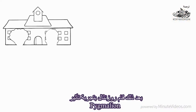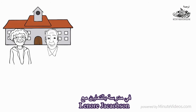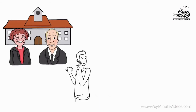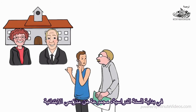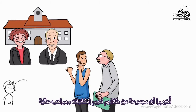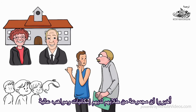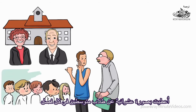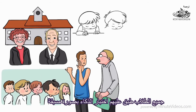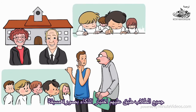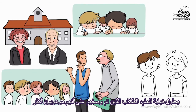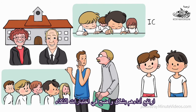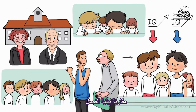Rosenthal then did the Pygmalion in School study together with Lenore Jacobson. At the beginning of the school year, a group of elementary school teachers were told that some of their new pupils had extraordinary talent and potential. This information, which was completely made up, was given about random average students in each class. All students had done IQ tests in advance. By the end of the year, the students described as more talented had significantly increased their performance in the IQ tests compared to the rest of the class.